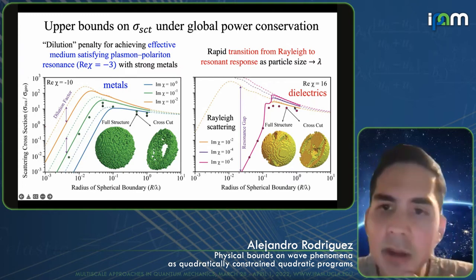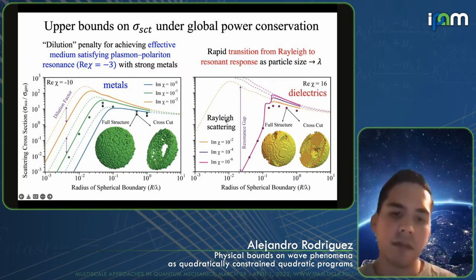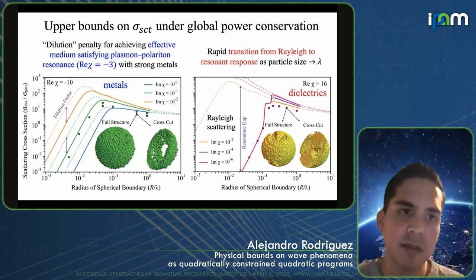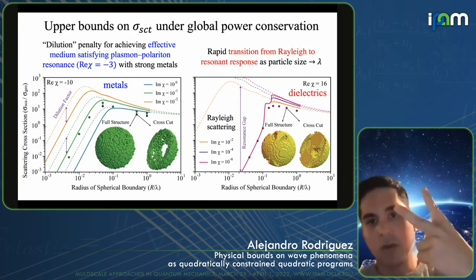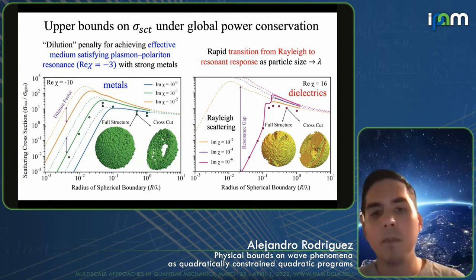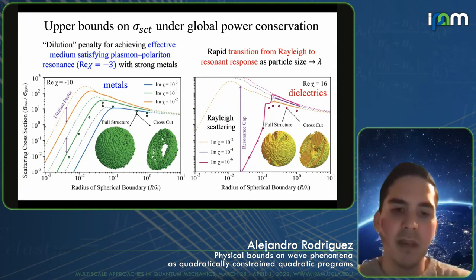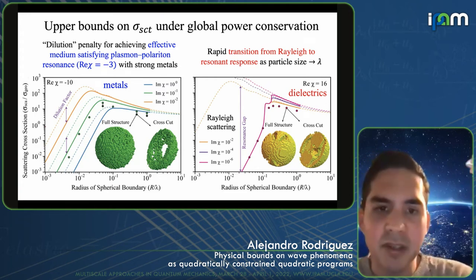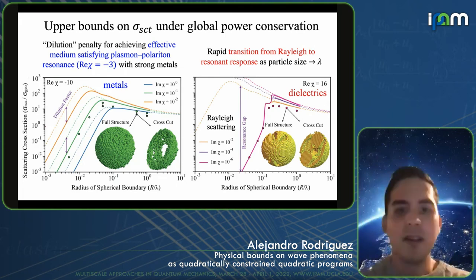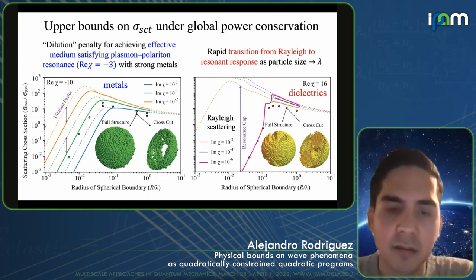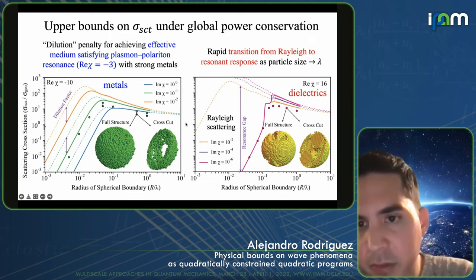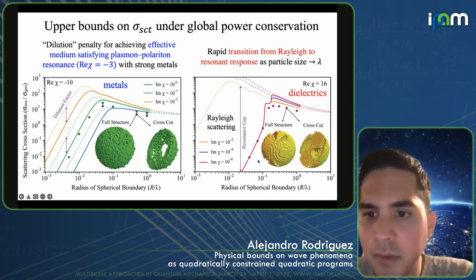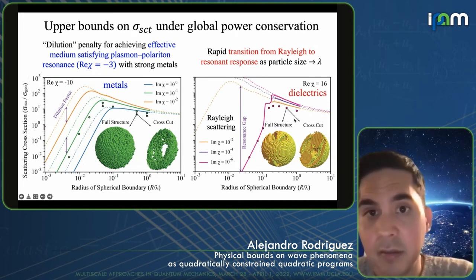The dielectric dots are coming very close to the limits — very surprising, because all you're doing with these limits is having a quadratic objective with just two constraints: global resistive and reactive energy conservation. So very little information about Maxwell's equations — just the coarsest kind of mean-field integral relation you can get from Maxwell's equations — yet surprisingly you get a lot of interesting physics and nearly tight results.